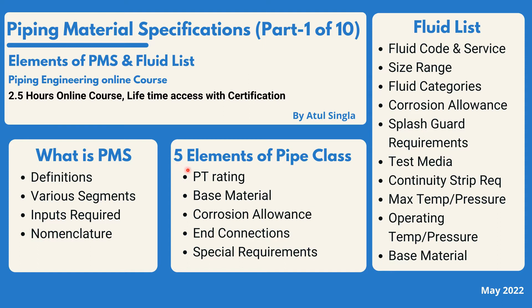We will look into the five elements of pipe classes: PT rating — what it is, how it is defined, and how it relates to PMS; base material — the basic things to understand what kind of materials are in any PMS; corrosion allowance — in more detail, since it is the basis for defining thickness of any pipe class; end connections — what kinds exist and how they are defined in PMS; and special requirements — any special conditions that need to be recognized in the nomenclature of a particular pipe class.